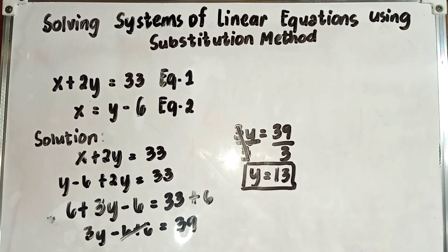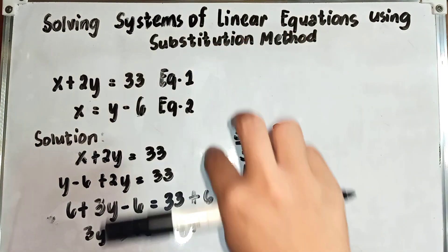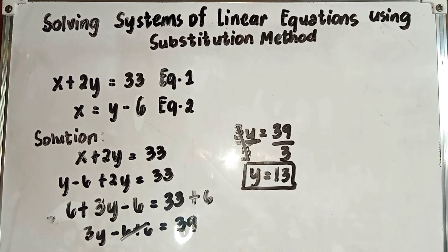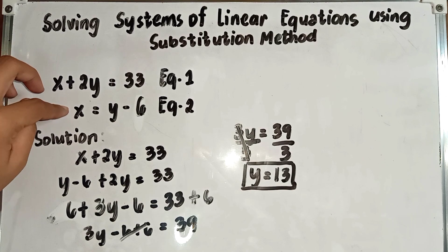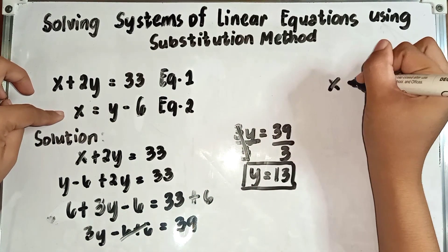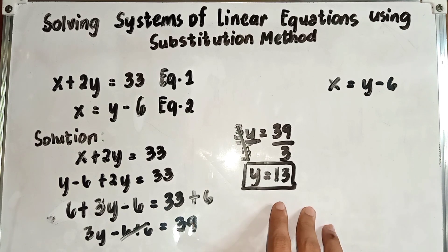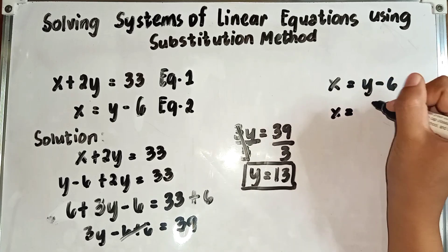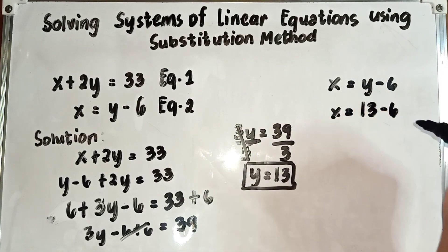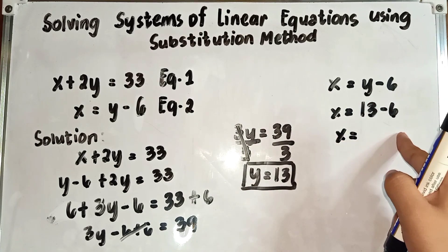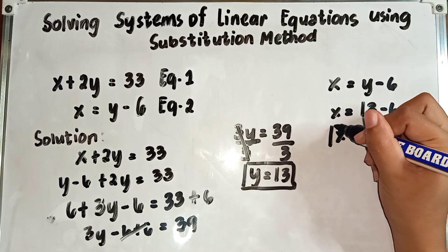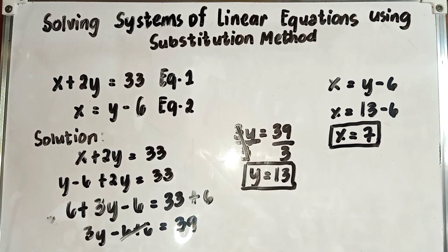Now that we have y, we find the value of x using either equation. Equation 2 is easier: x is equal to y minus 6. Substituting the value of y, which is 13: x is equal to 13 minus 6, so x is equal to 7. So our answers are x equals 7 and y equals 13. Later on, we are going to check.